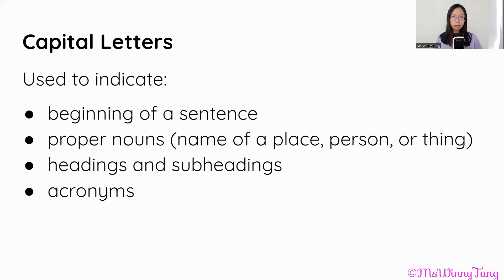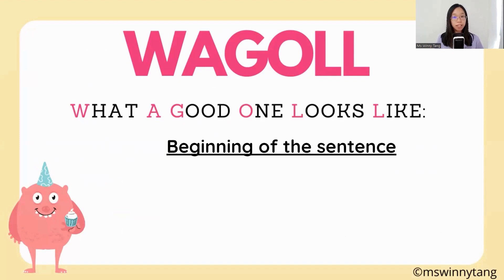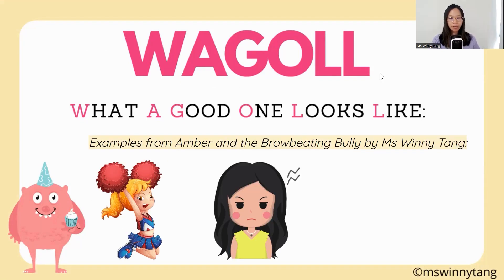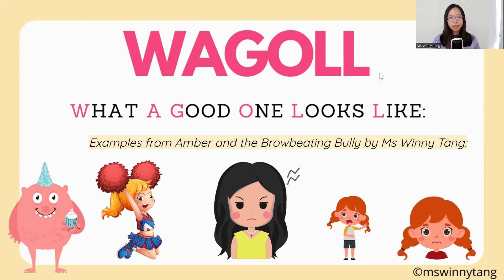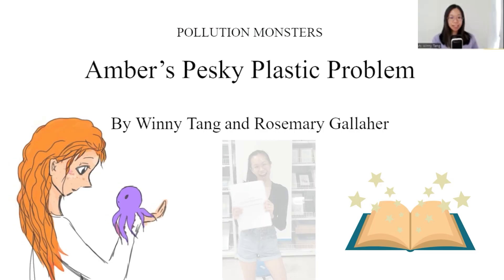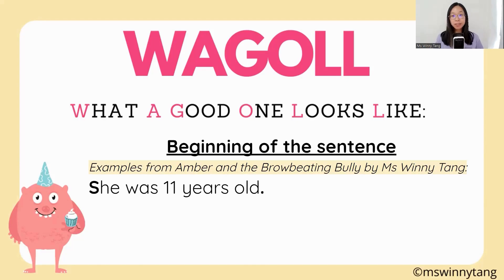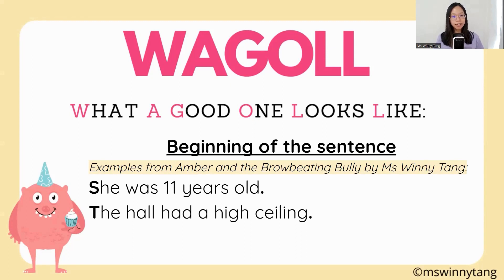So we know that capital letters are used to indicate these four areas. Let's have a look at some examples. Here's an example of it being used at the beginning of a sentence, from a narrative I've written called Amber and the Brow Beating Bully — actually a prequel to a book my friend and I are writing. 'She was 11 years old.' You can see the capital letter at the beginning and a full stop at the end. 'The hall had a high ceiling' — capital T and a full stop at the end.